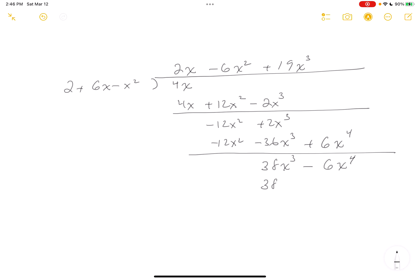And what does it give you? 38X cubed. And then let's see, 19 times 6, right? That's going to be 60 and 54. That's 114. So plus 114X to the fourth minus 19X to the fifth. Subtract. Minus 120X to the fourth plus 19X to the fifth.